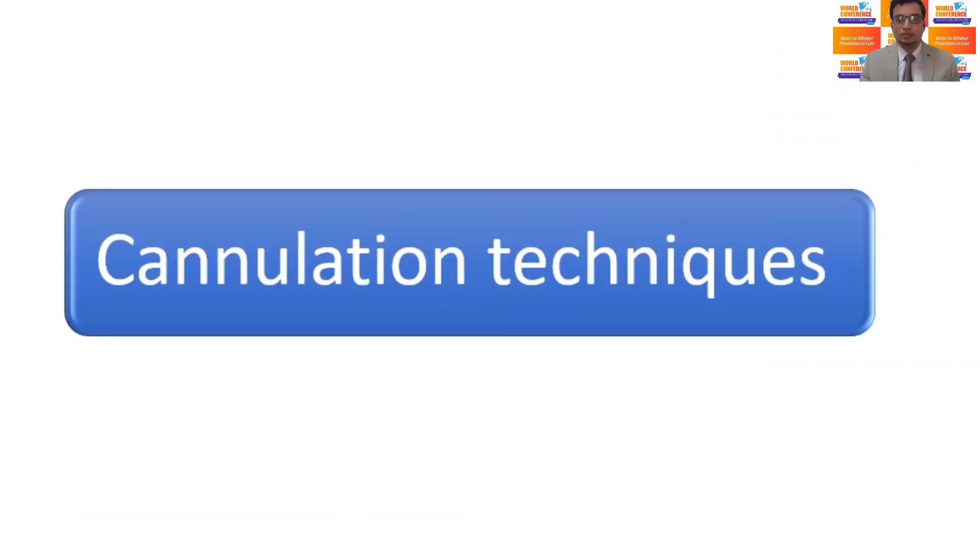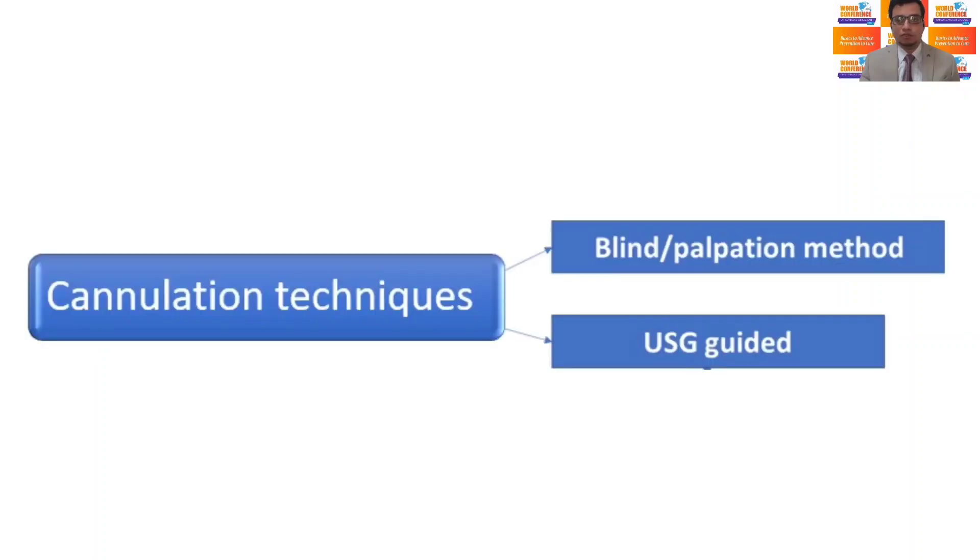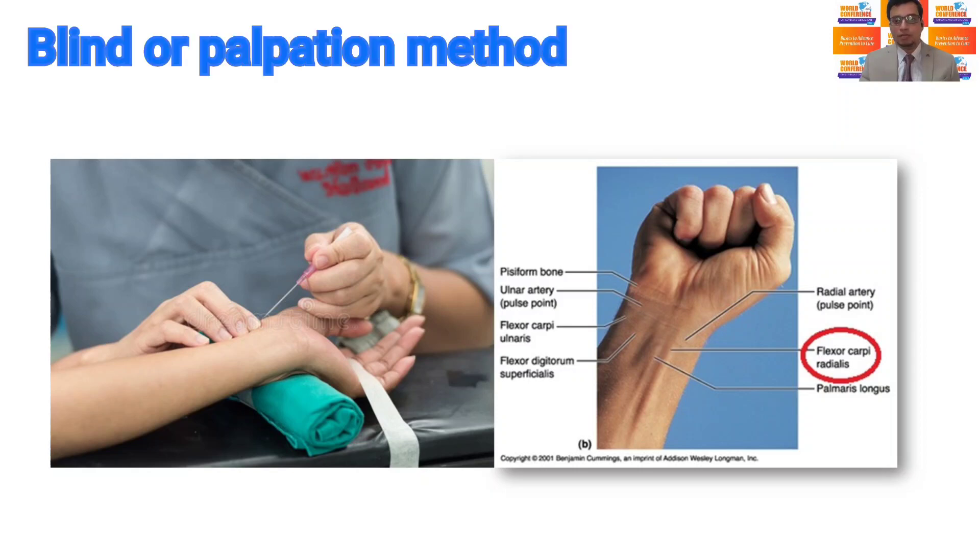What are the various techniques to insert the arterial cannula? Basically, there are two approaches for arterial cannulation: the blind approach and ultrasound-guided approach. In blind approach, the radial artery is palpated between the distal radius and the flexor carpi radialis tendon.